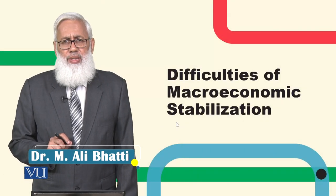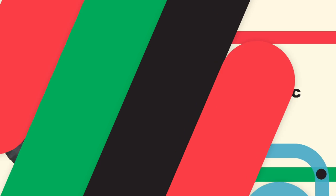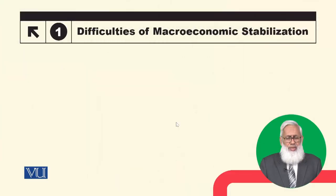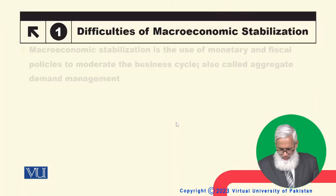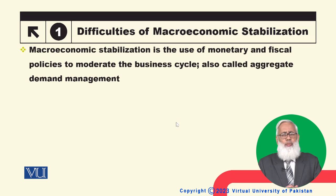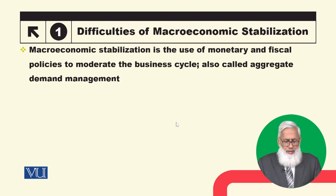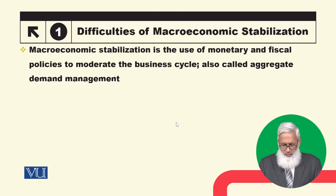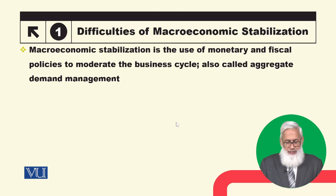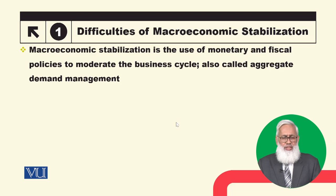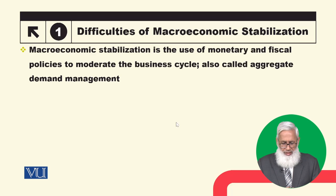Students, today we will talk about stabilization policies — what are the problems? Macro-Economic Stabilization is the use of monetary and fiscal policies to moderate the business cycle, also called Aggregate Demand Management. Business cycle को moderate करने के लिए monetary and fiscal policy के use को हम Aggregate Demand Management भी कहते हैं।